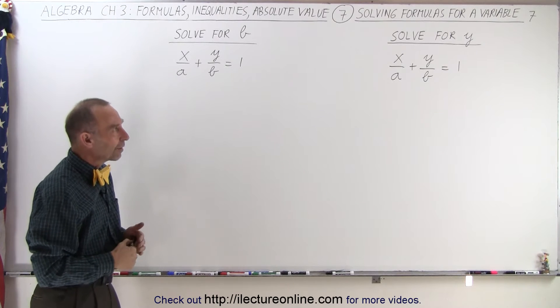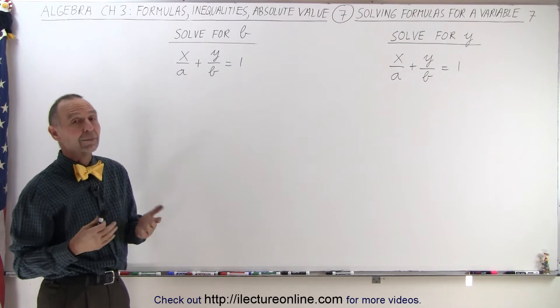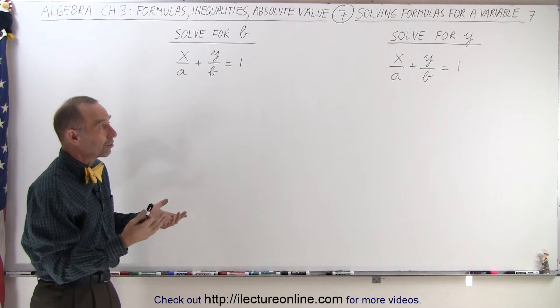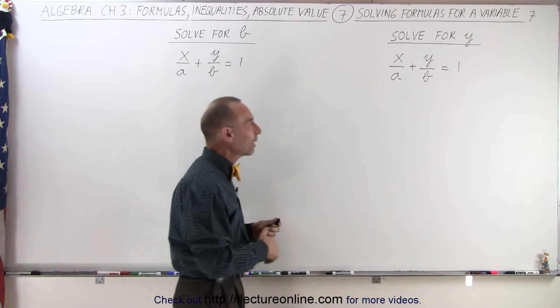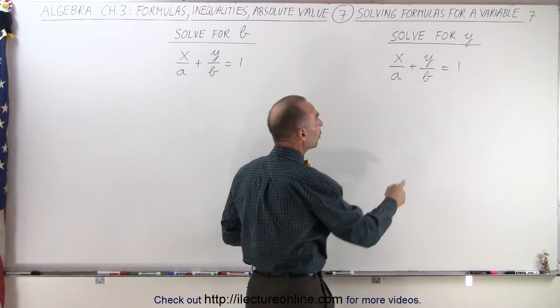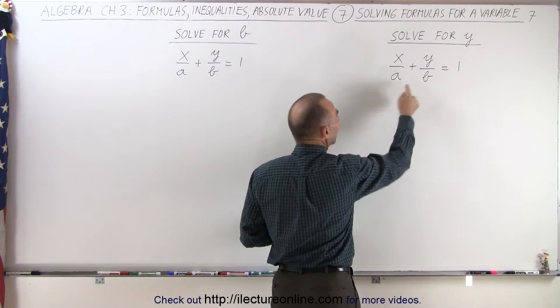Okay, on the right side we want to solve that for y, but there's two fractions. We want to get rid of the fractions, we do that by multiplying both sides of the equation by the lowest common denominator, which in this case will be the product of a and b.